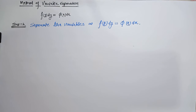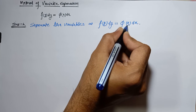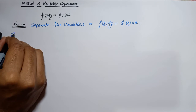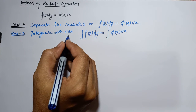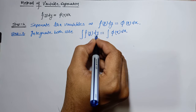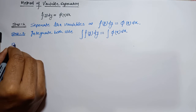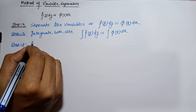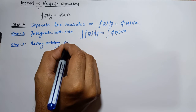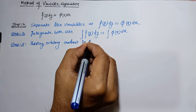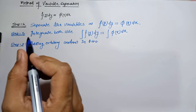The steps to solve are: Step one — separate the variables as f(y) dy = g(x) dx. Step two — integrate both sides: integration of f(y) with respect to y equals integration of φ(x) with respect to x. Step three — add an arbitrary constant on the right-hand side.